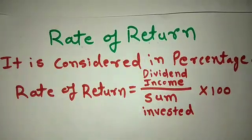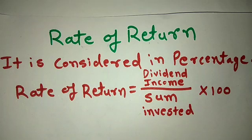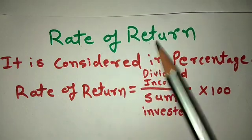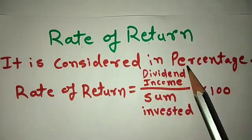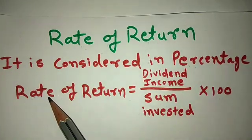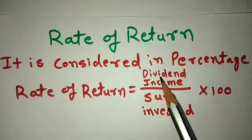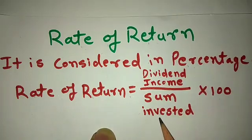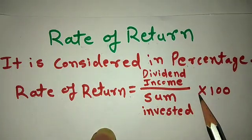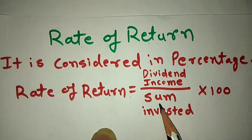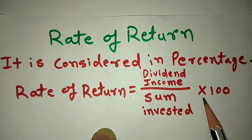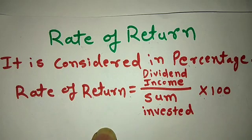Rate of return means the return received on your investment, expressed as a percentage. The formula is: Rate of Return = (Dividend Income ÷ Sum Invested) × 100. This tells us how much dividend we got compared to how much money we invested, giving us the rate of return as a percentage.